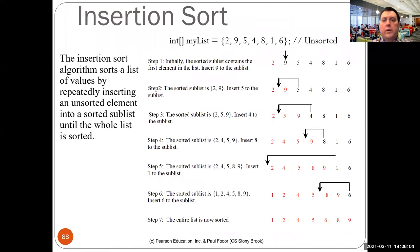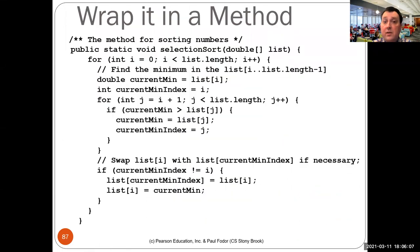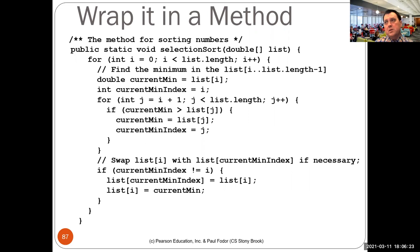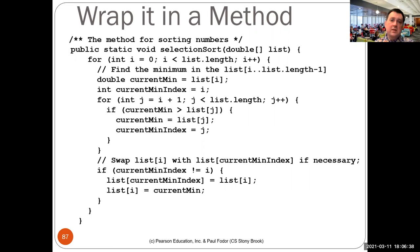The problem with selection sort is that it's not very efficient. When finding the minimum you execute n comparisons, then n minus 1, then n minus 2, and so on down to 1. The total is n + (n-1) + (n-2) + ... + 1, which equals n(n+1)/2 — quadratic, with n² as the dominating factor. For an array of 1000 elements you'd do about a million comparisons, making it a somewhat slow sorting algorithm.